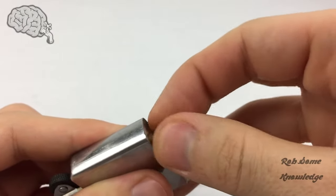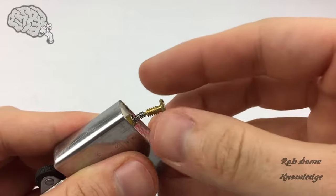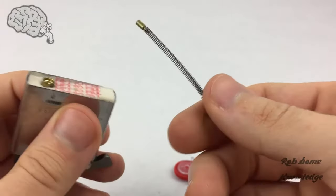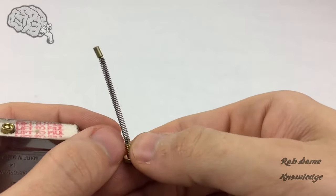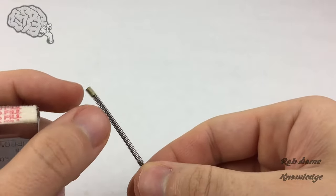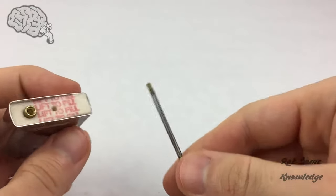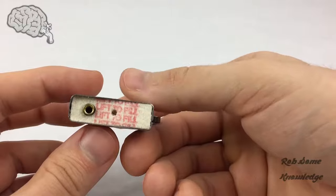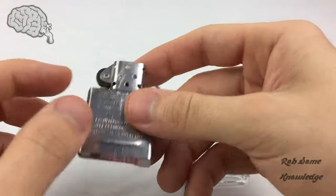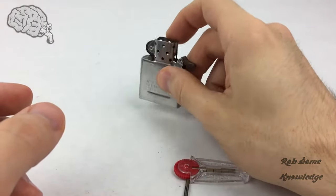It shouldn't, but see like that it kind of popped out a little bit. Then we're just going to pull that out like so. That is your flint spring and just a little pusher rod.